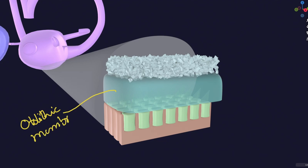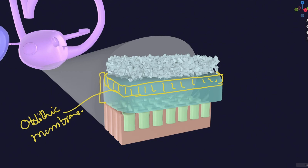There is some controversy in the literature regarding the otolithic membrane. Some textbooks say only the top layer of the gel-like material — onto which the otoconia sit — is called the otolithic membrane, and the rest is just gel-like material. Other books say the entire jelly-like structure is the otolithic membrane. Both usages exist in the literature.